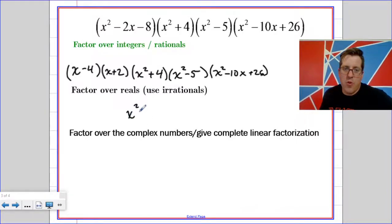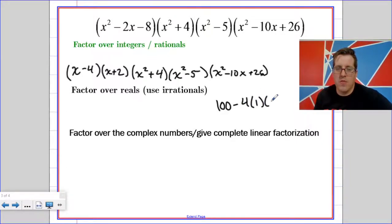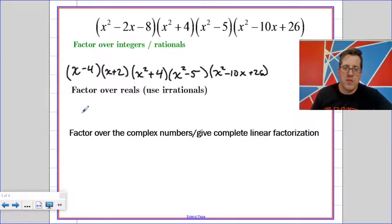x squared plus 4 does not have real zeros because its zeros would be plus or minus 2i. x squared equals negative 4. The same thing for x squared minus 10x plus 26. If you take the discriminant of that, b squared minus 4 times a times c, you're going to get a negative number.